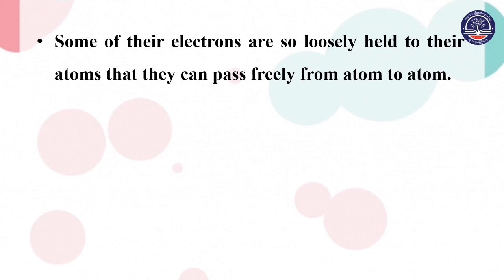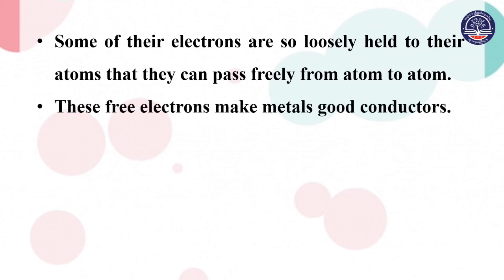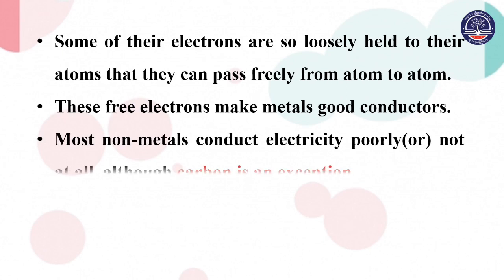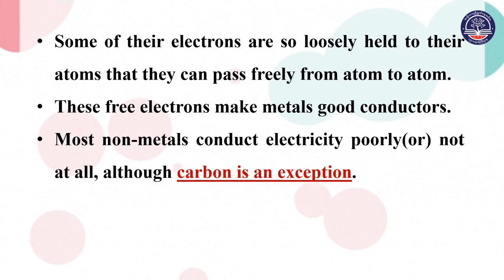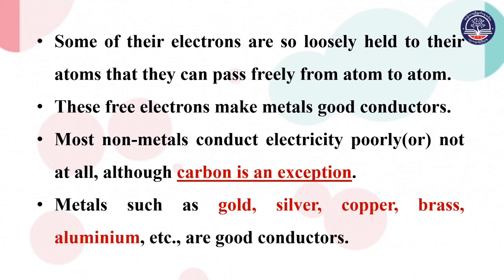Free electrons can pass freely from atom to atom, and these free electrons make matter a good conductor. Matters such as gold, silver, copper, brass, and aluminum are conductors.